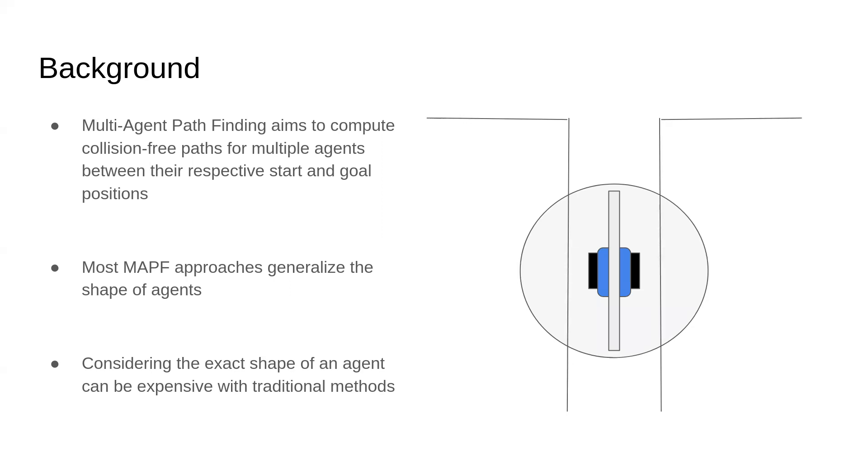Nevertheless, these naive methods may cause valid paths to be rejected. We can see this in the figure on the right. In this figure an agent is traveling through a hallway carrying a beam. With the traditional approach of a bounding circle, the planner would fail to find a solution through the hallway even though one exists.